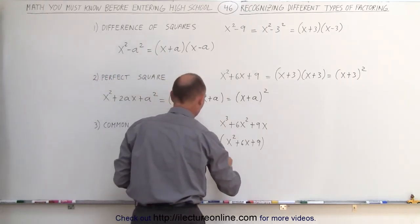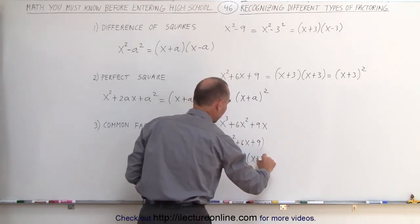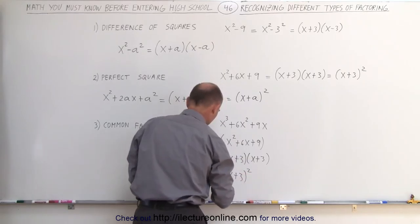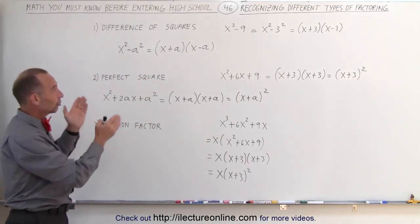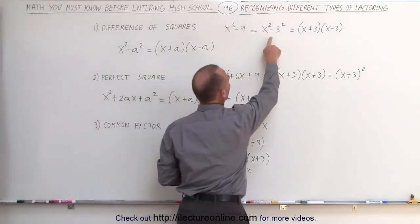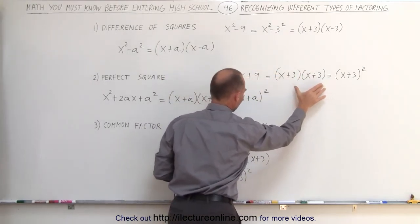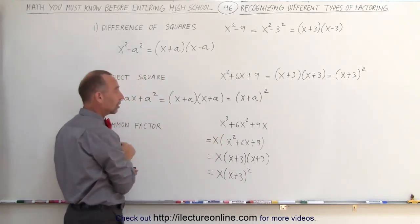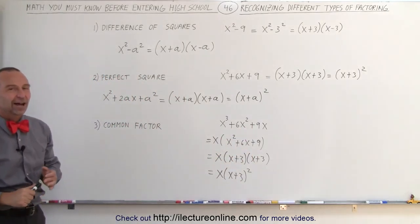In other words, this can now be written as x times x plus 3 times x plus 3, or simply x times x plus 3 quantity squared. It means you have to be able to recognize these forms before you try to factor them because there are very special factoring techniques associated with each one of them. The difference of squares can be factored like this, the perfect square can be factored like this, and if you have something that already has a common factor in it, you should factor out the common factor first before you try to factor the rest. And that's how it's done.